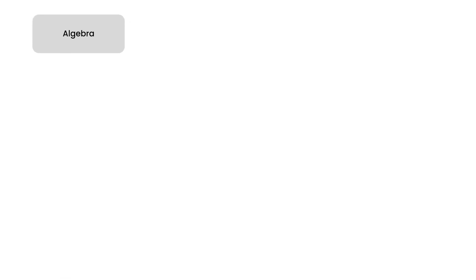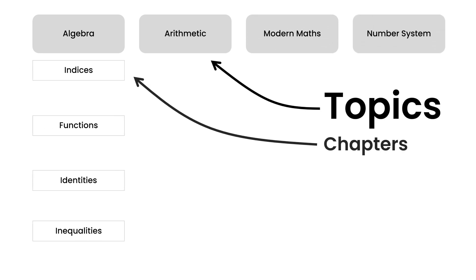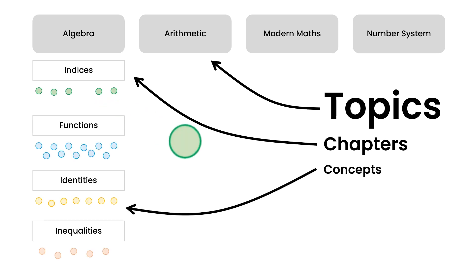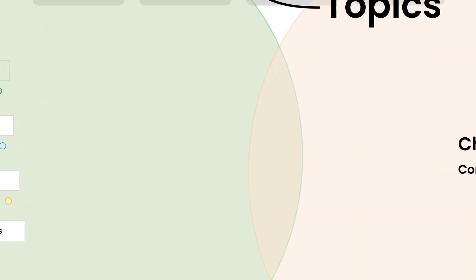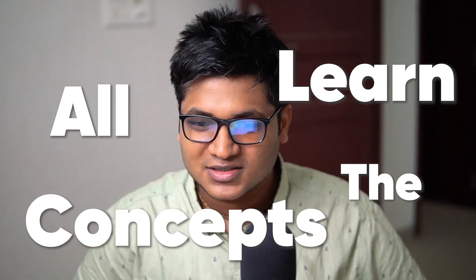So how do we start doing that? By not learning solutions, but by learning concepts. You have algebra, arithmetic, modern math, and number systems — each of them have a lot of chapters, each chapter has a lot of concepts. What IP Math is going to do is take one concept from here and one concept from there, and boom — you have a brand new question. So if you learn only one concept and not the rest, you might not be able to solve questions. Moral of the story: learn all the concepts. Even if you're not the best at any one, do not skip or ignore it.